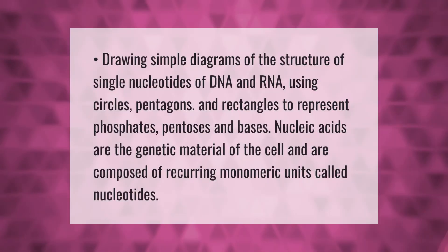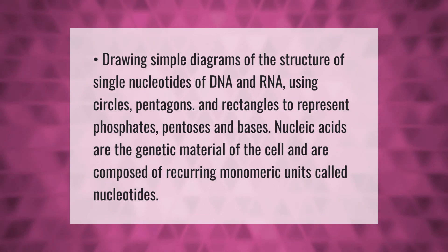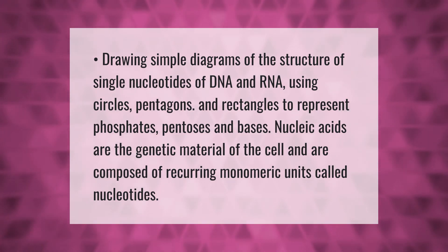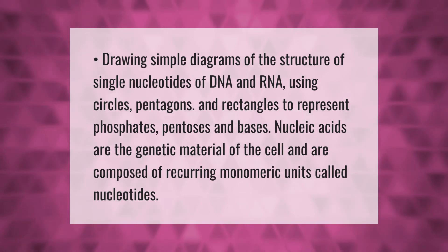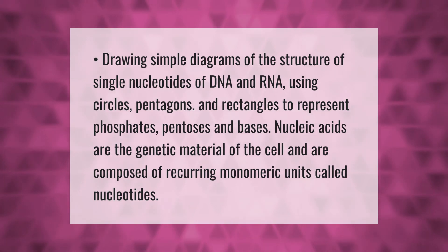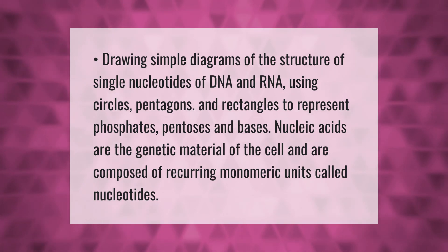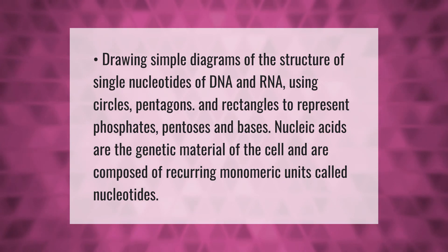Drawing simple diagrams of the structure of single nucleotides of DNA and RNA, using circles, pentagons, and rectangles to represent phosphates, pentoses, and bases. Nucleic acids are the genetic material of the cell and are composed of recurring monomeric units called nucleotides.